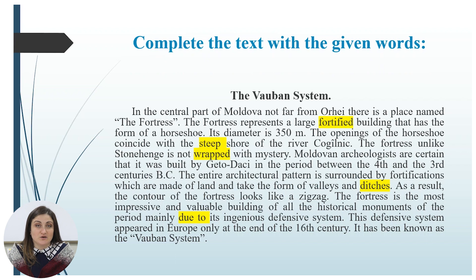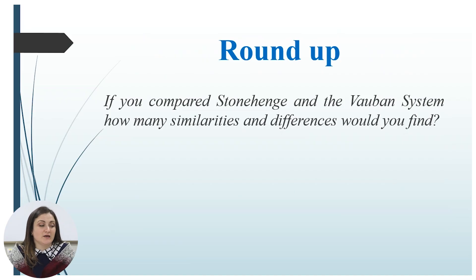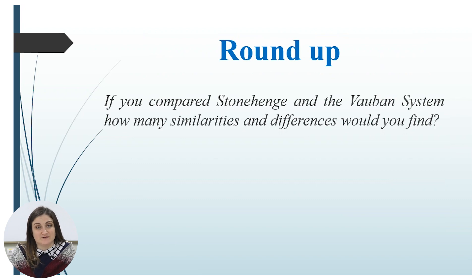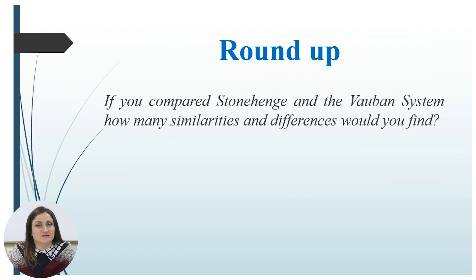If you succeeded in completing this text, let us check. If you have the same answers, it means that you did a great job and completed it correctly. And usually at the end of our lesson, I have something special for you — a reflective task. The task is: if you compare Stonehenge and the Vauban system, how many similarities and differences would you find? Think about these two monuments and find the similarities and differences.